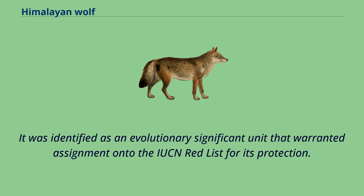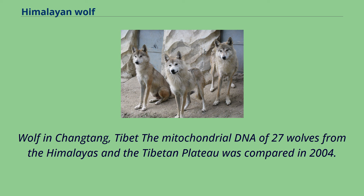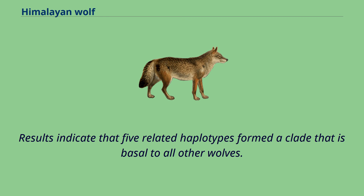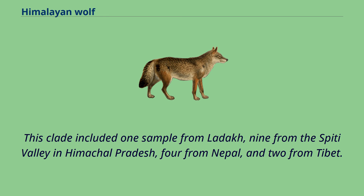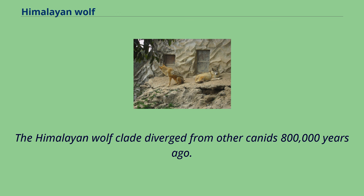The mitochondrial DNA of 27 wolves from the Himalayas and the Tibetan plateau was compared in 2004. Results indicate that five related haplotypes formed a clade that is basal to all other wolves. This clade included one sample from Ladakh, nine from the Spiti Valley in Himachal Pradesh, four from Nepal, and two from Tibet. The Himalayan wolf clade diverged from other canids 800,000 years ago. Seven wolves from Kashmir did not fall into this clade.